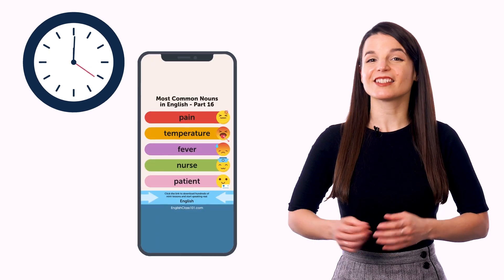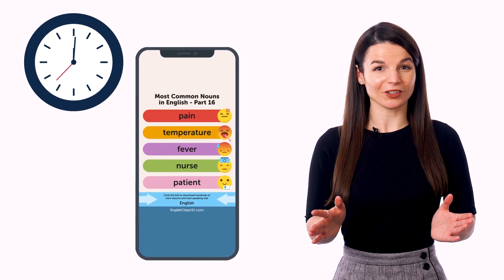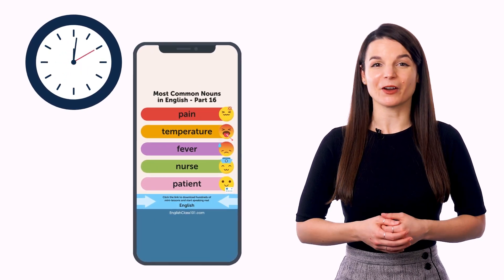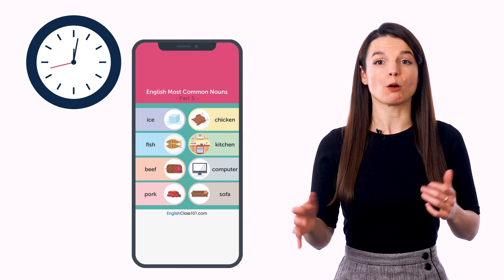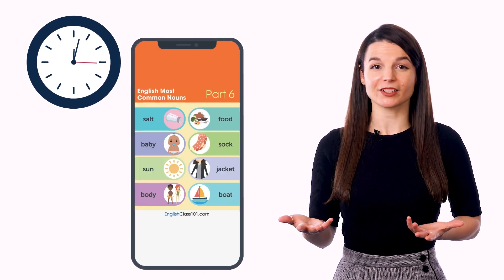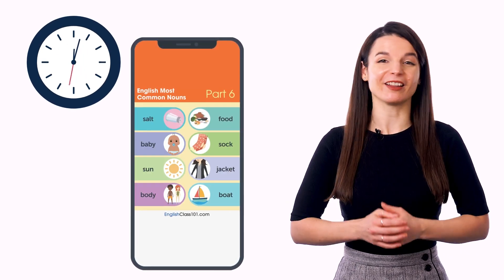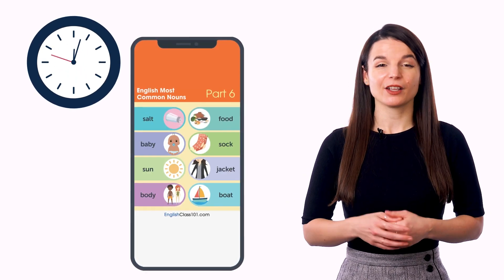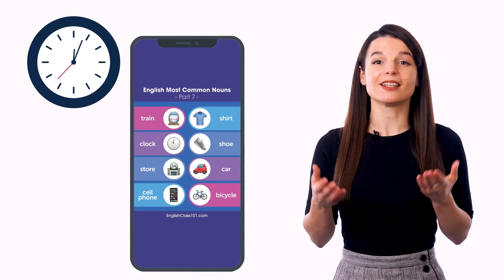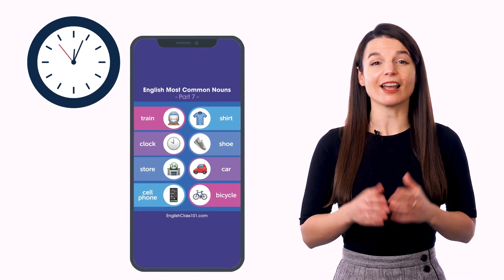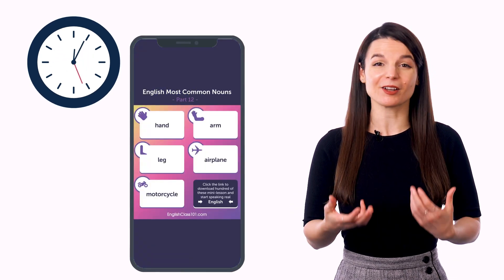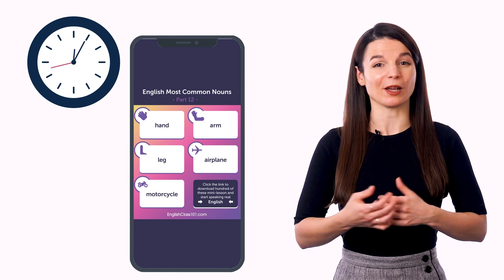Second, decide when you'll learn. Most of us pull out our phones to waste time and swipe around while we're on the bus or train, while waiting for someone, or while on the couch. Think about when you're most likely to do this and designate that as learning time, so your brain automatically knows when to learn.